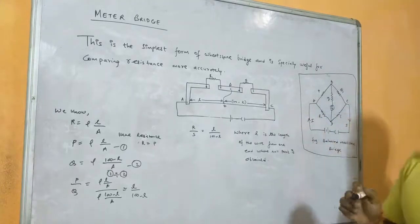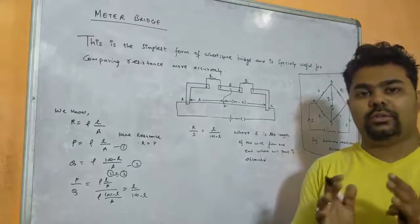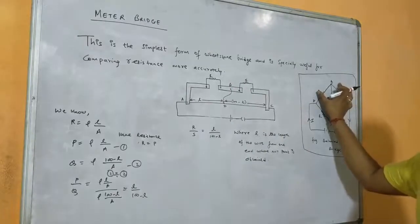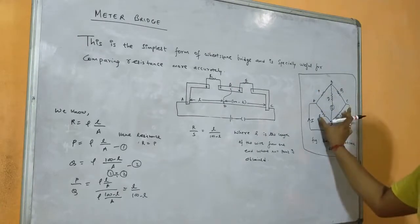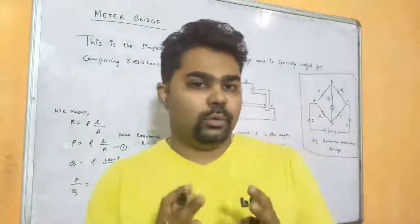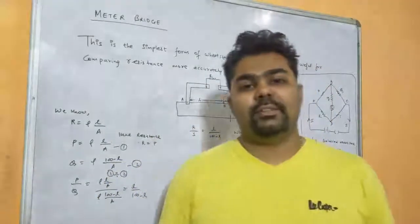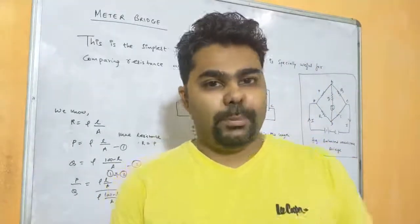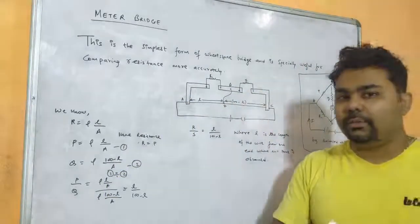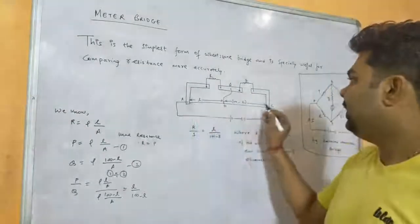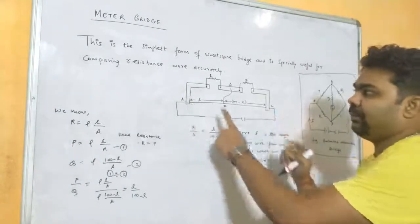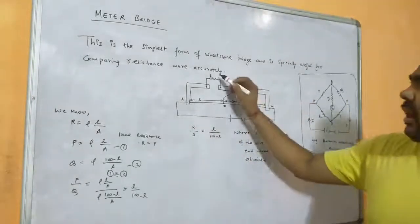The galvanometer shows null or zero deflection. P and Q are in series, and R and S are also in series. If three of the four resistances are known, the fourth unknown resistance can be found. This is the practical application of the Wheatstone bridge — therefore, the meter bridge uses a wire of 100 centimeters, that is one meter, fixed between A and C.